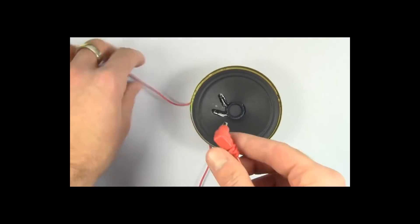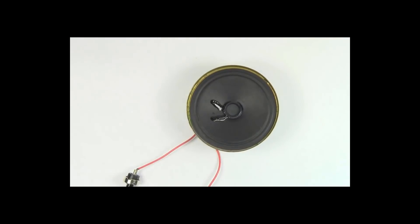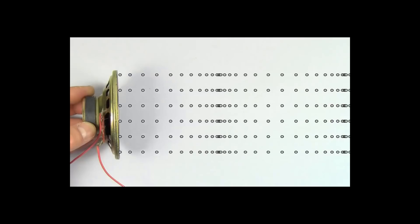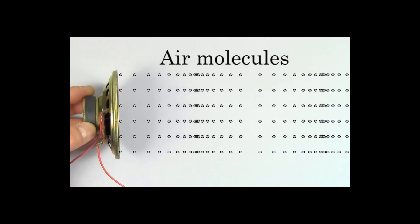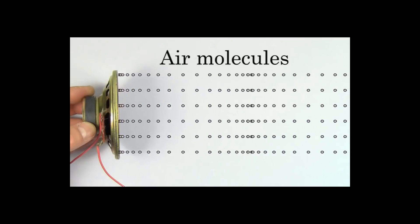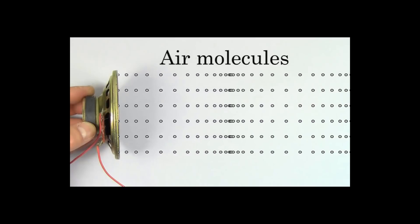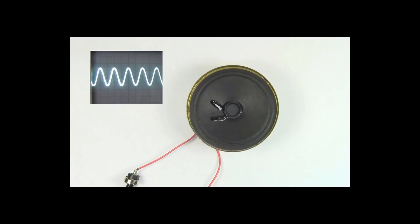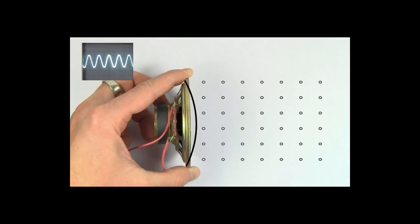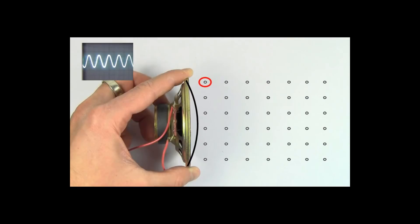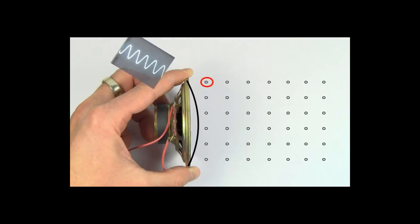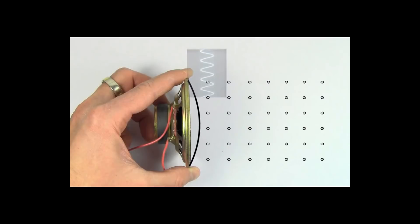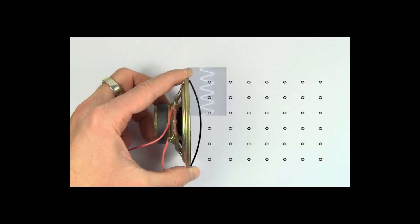This is what a sound wave sounds like. But what does a sound wave look like? The air through which the sound wave is traveling looks something like this. But if you want another visual representation of the sound, we can hook this speaker up to an oscilloscope, and it gives us this graph. We say that this shape represents the sound wave, because if we focus on a single molecule of air, we see that it moves back and forth just like a sine or cosine graph.